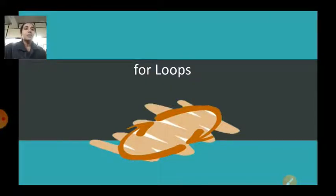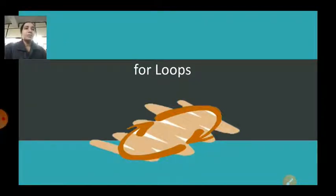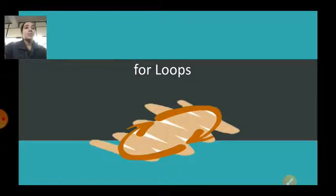I am printing the values multiple times till I get a result. I will be having one condition, and till that condition is met I will be using the loops and executing. That is it — those are for loops. So let's check what all comes in the for loop.